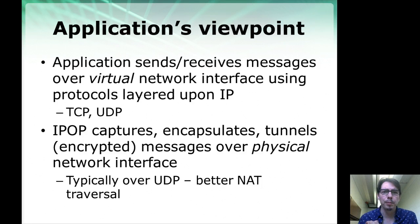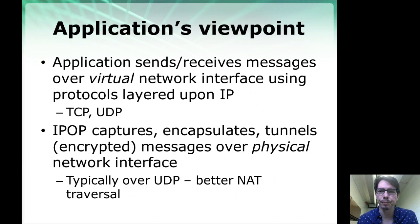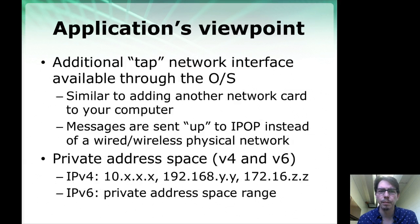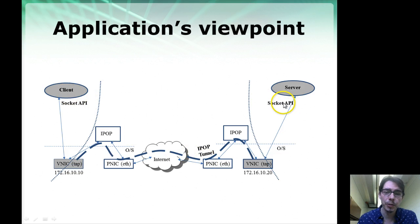Applications can use IPOP with whatever protocol is layered on top of IP — that could be TCP or UDP in typical cases. For the underlying tunnel, IPOP uses UDP, because UDP makes NAT traversal easier, and we'll see that in more depth in a later slide. The client and server using IPOP could use TCP, UDP, or any other protocol layered on top of IP, while the tunnel between physical network interfaces is typically done over UDP for NAT traversal.